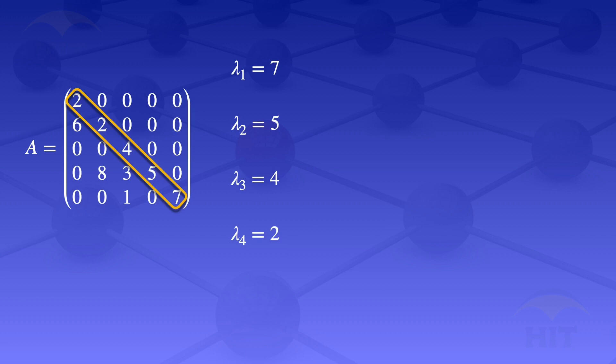Now going to answer the question about algebraic multiplicity. Algebraic multiplicity is the number of times an eigenvalue is a root of the characteristic polynomial — that is, the number of times a value appears as an eigenvalue.